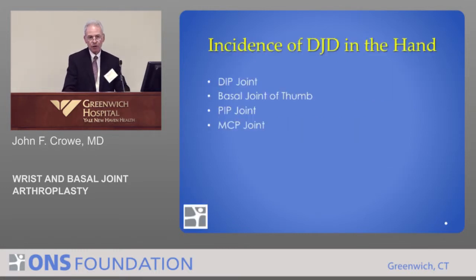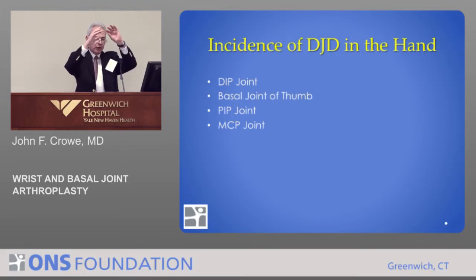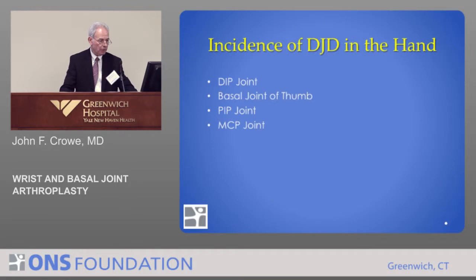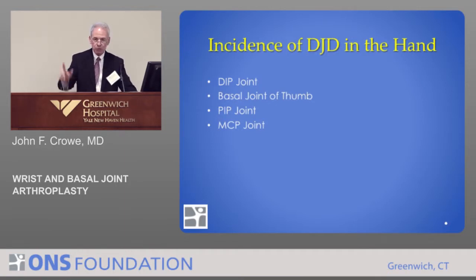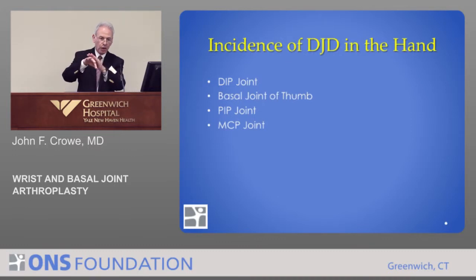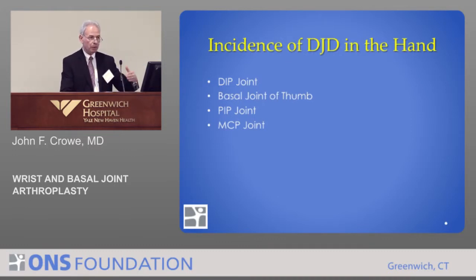What about the incidence of arthritis in the hand? Arthritis is by far more common in the distal joint — the end joint of the finger or the thumb — more so than the basal joint, more so than the PIP joint or middle joint, and more so than the metacarpophalangeal joint, the main knuckle joint. That's statistically the most common arthritis.